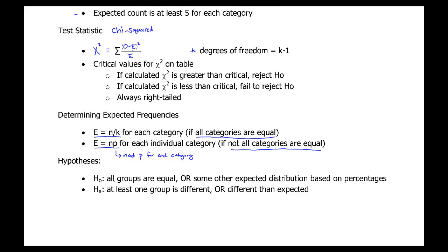For the hypotheses: if you're saying all groups are equal, your null hypothesis will say all groups are equal and the alternative will say at least one group is different. You'd calculate expected values using n divided by k. If you have some other expected distribution with different percentages for each category, your null hypothesis states that specific distribution, your alternative says it's different, and you'd use n times p to calculate expected values.